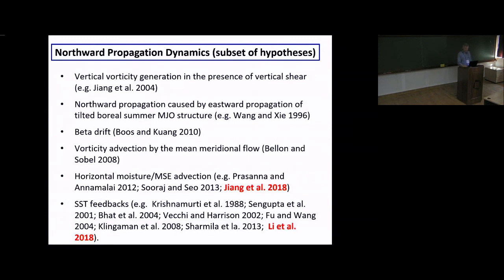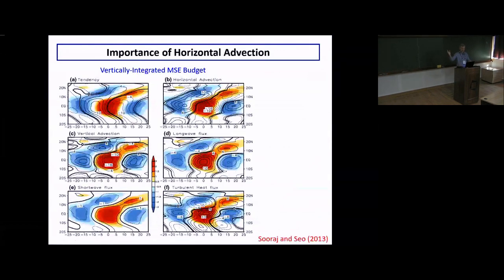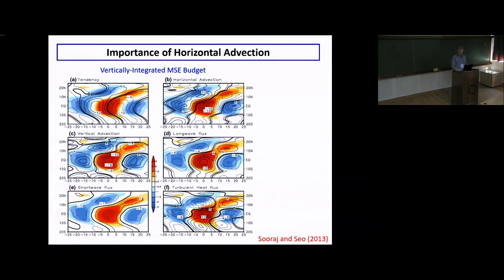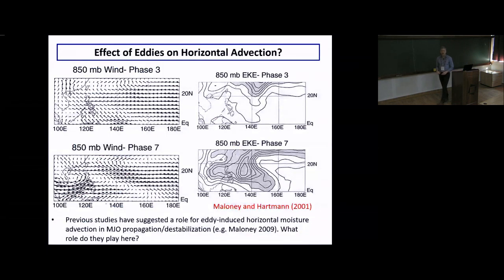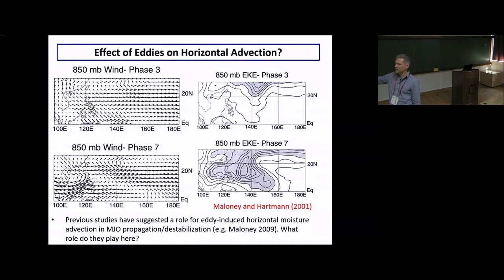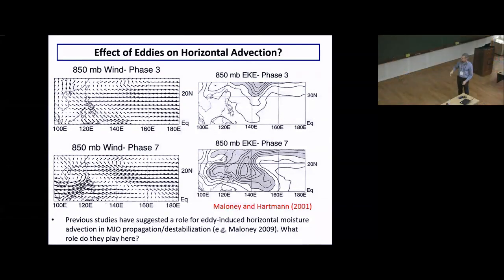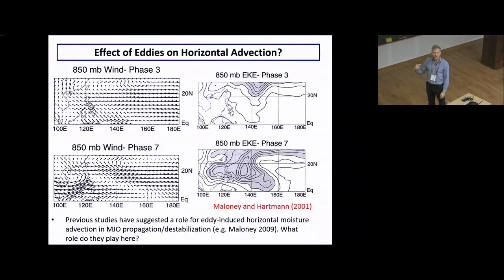We talked about northward propagation dynamics and the importance of horizontal advection for moving the BSISO northward. One thing I didn't mention yesterday is the effect of eddies — here referring to easterly waves, synoptic systems on 3-to-10 day time scales in a wave train pattern — on horizontal advection.